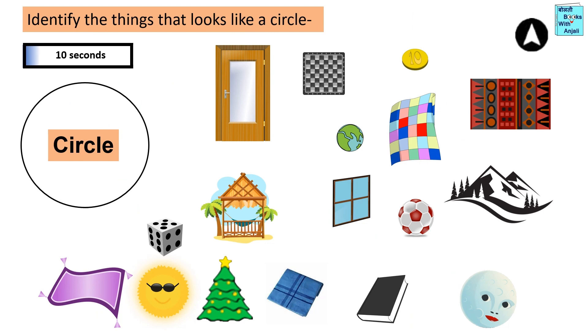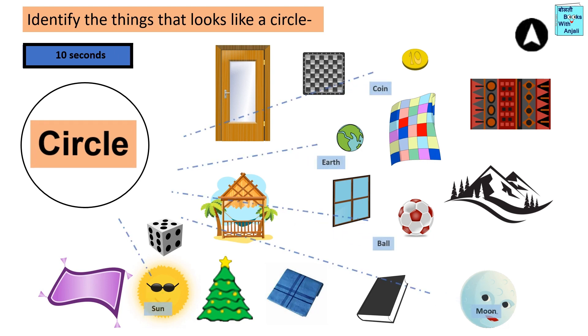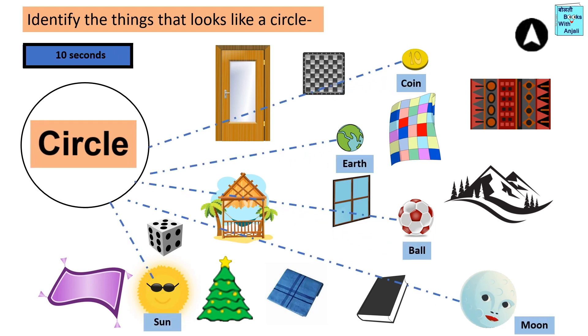Identify the things that look like a circle. Circle shaped things are coin, earth, ball, moon, and sun.